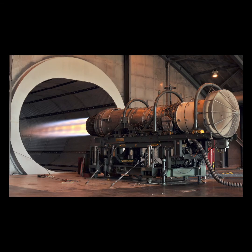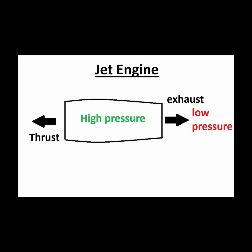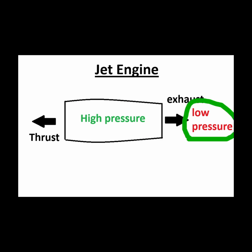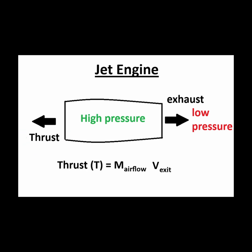Jet engines produce thrust using a fundamentally different approach than propellers. The jet engine converts energy from fuel into an internal high pressure relative to the outside pressure. This pressure difference provides a net force or thrust to drive the aircraft forward. A simplified expression for this thrust is given as T equals the airflow mass flowing through the engine times the exit velocity, v-exit.